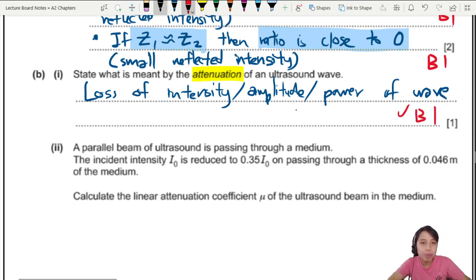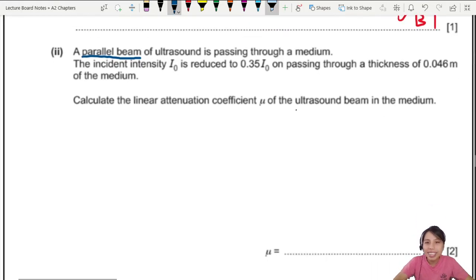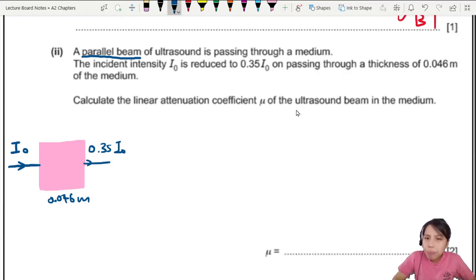Last one. Parallel beam. Parallel means we can use a certain equation. Parallel beam is passing through a medium. This calls for a diagram. I'm going to stick to my pink color. So you have an incident wave called this I knot. Somehow, after passing through a certain amount, 0.046 meter of a medium, then the intensity become 0.35 I knot. It has dropped. Why? This is in other words like 35% of I knot. Where did the other amount go? Absorbed. This whole medium will get hot because the energy has been absorbed.